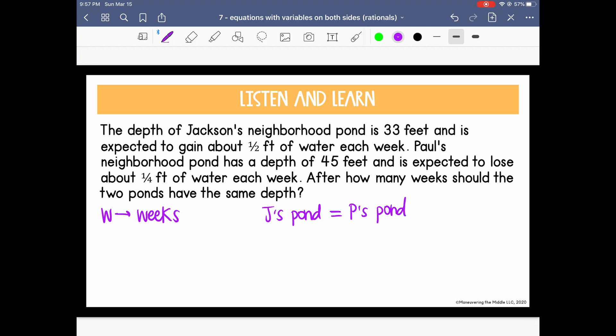Sometimes writing it out in words helps me to see what I'm setting up, and now I can go back, and let's create an expression for Jackson's Pond. So what do we know about Jackson's Pond? Well, it's 33 feet, and it's expected to gain 1/2 foot of water each week. Let's write out what we just said. We said it's starting at 33 feet. Gaining means that we are adding 1/2 foot of water each week. Well, we know the number of weeks is our variable, and each suggests that it needs to be multiplied. So we're going to write this as 1/2 each week, or times the number of weeks. Then for Paul's Pond, we know his pond has a depth, a starting depth of 45 feet, and it is expected to not gain, but lose, so we're subtracting 1/4 foot of water each week. Minus 1/4 foot of water each week.